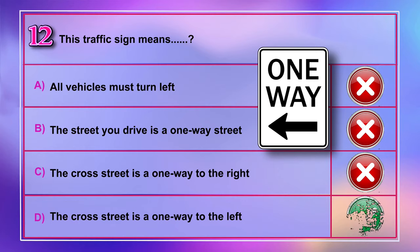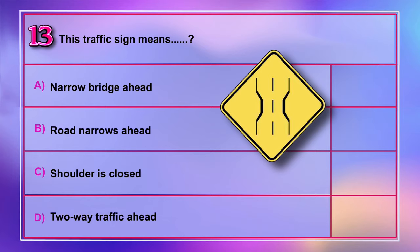Question number 13: This traffic sign means A) narrow bridge ahead, B) road narrows ahead, C) shoulder is closed, D) two-way traffic ahead. Correct answer is A: narrow bridge ahead.